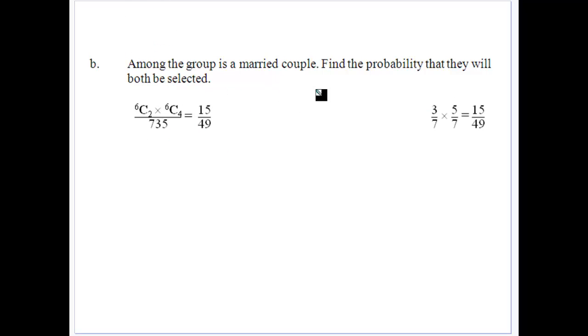So keep that in mind for the next part because we want to find the probability. We've got a married couple in the group. Find the probability that they will be both selected. Now the way that we can look at this with our counting techniques is if they're both going to be in that group, then the other two women have to come from the six remaining, and the other four men have to come from the six remaining. So the number of groups that would include the married couple over the 735, because that's the total number of groups, which would be 15 out of 49.